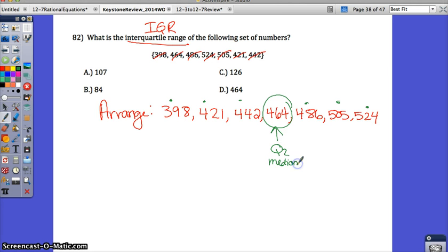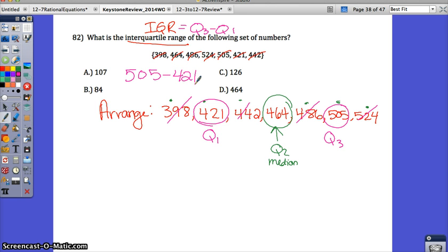Then to find your Q1 and Q3, you need to find the medians of each half. So cancel, cancel, cancel. Your lower quartile is 421. The upper quartile is 505. The interquartile range is equal to Q3 minus Q1, or 505 minus 421. So 505 minus 421 will give you 84. The correct answer for 82 is B.